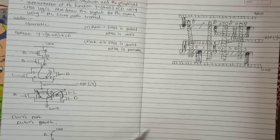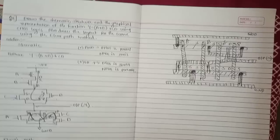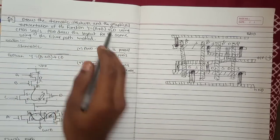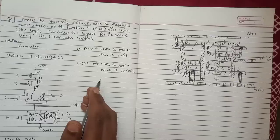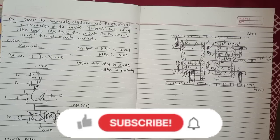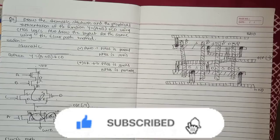This is the schematic part, this is the Euler's path, and this is the layout. Whatever was asked in the question, we have drawn all three parts. If you have any doubts regarding these questions, please comment in the comment section and I will clarify. In the next video we will explain about question 8B. Please like the video, subscribe to Mission V2 YouTube channel, and share with your friends. Thanks for watching.